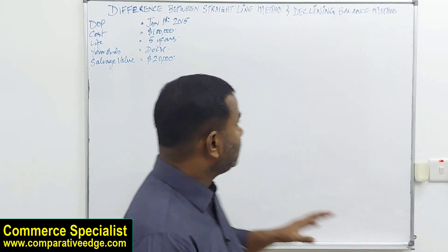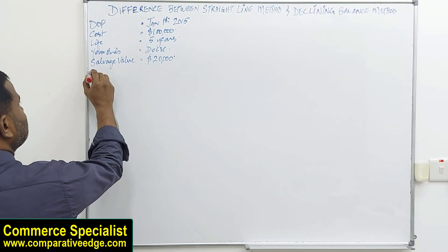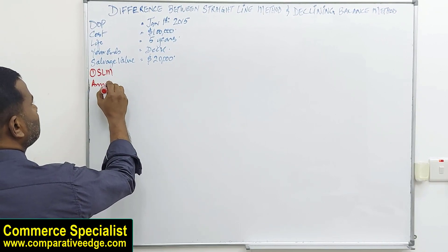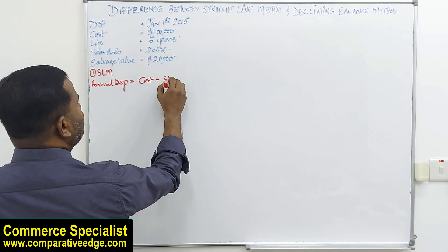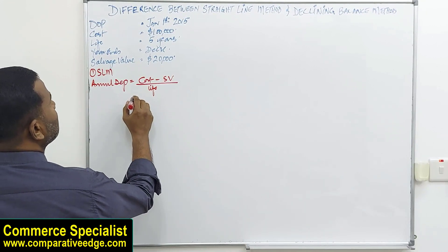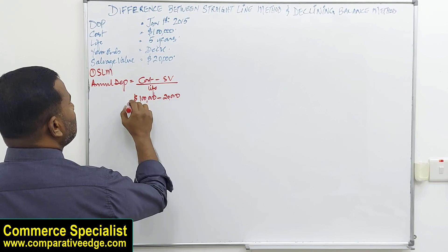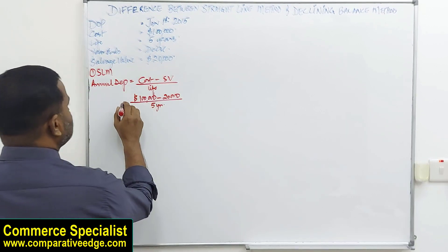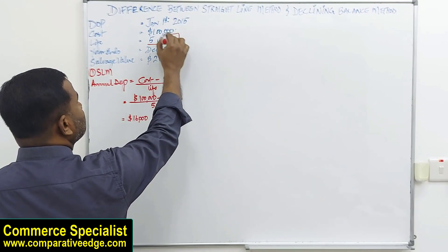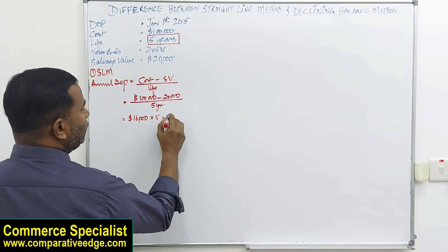So first, I'm going to calculate depreciation by straight line method — SLM. The formula is: annual depreciation equals cost minus salvage value divided by useful life. Plugging in the numbers: cost is 100,000, salvage value is 20,000, useful life is five years. So annual depreciation comes to 16,000. Over five years, every year the depreciation will be 16,000, so total depreciation is 80,000.